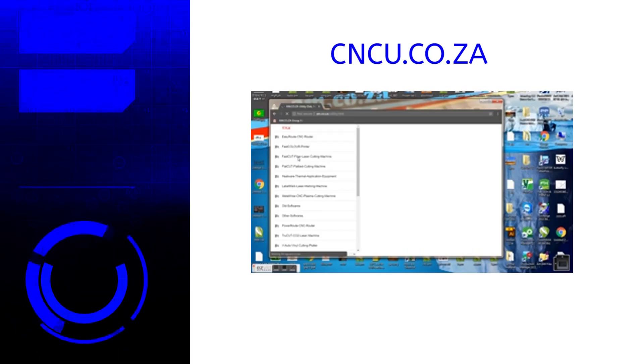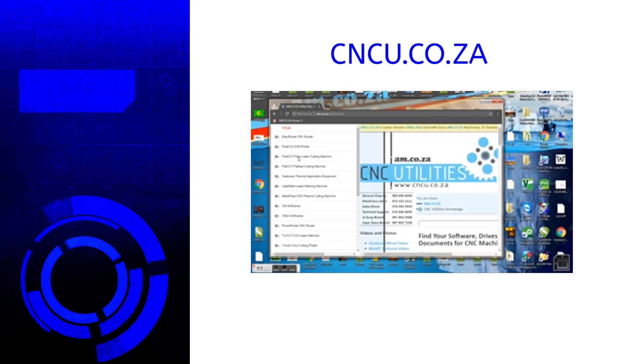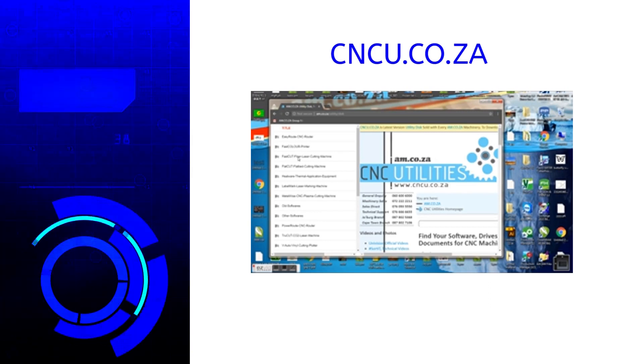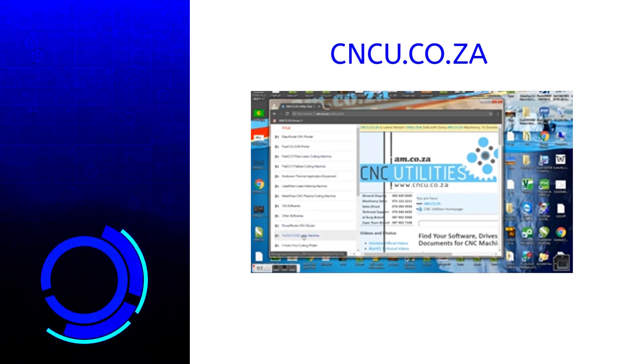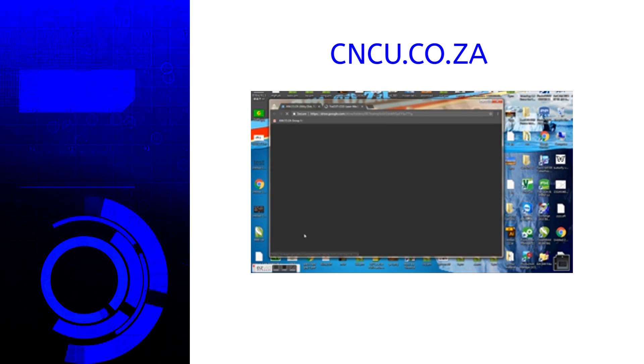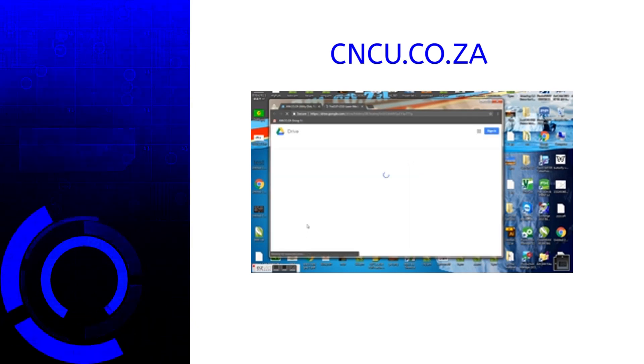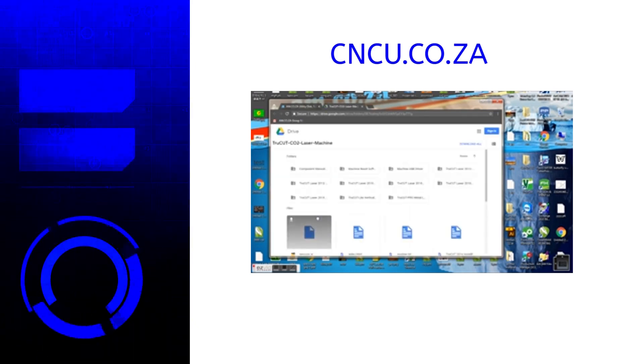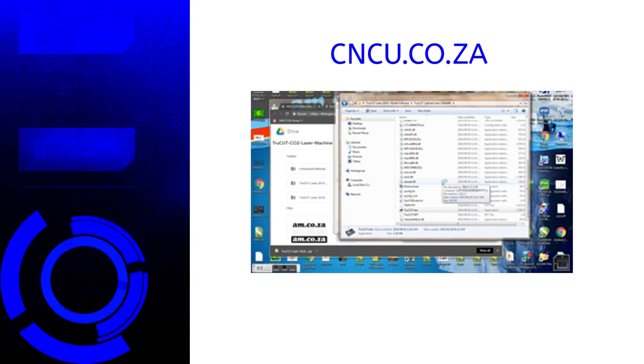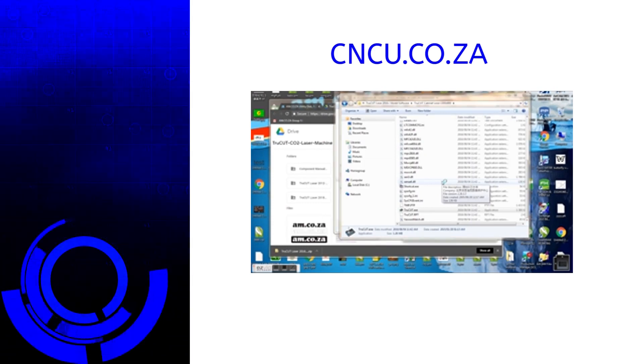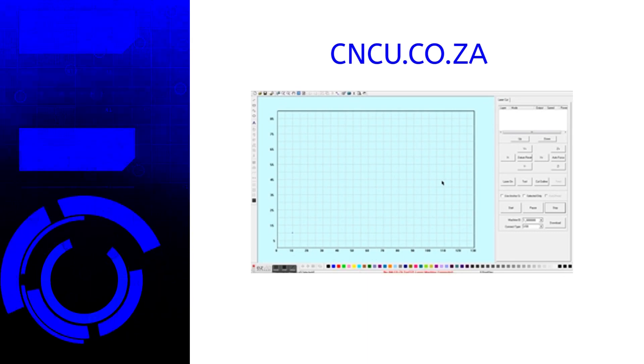The software for the TrueCut machine is free and downloadable from our utility disk website on cncu.co.za. You can download it and play around with it if you like. The software is Windows only and able to connect to the machine by USB cable or network cable or even by a flash drive if you don't want to be connected.